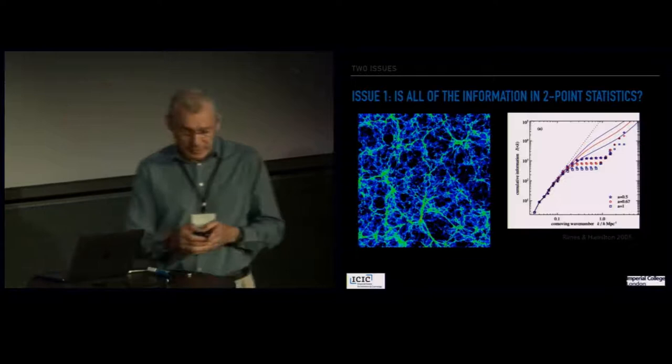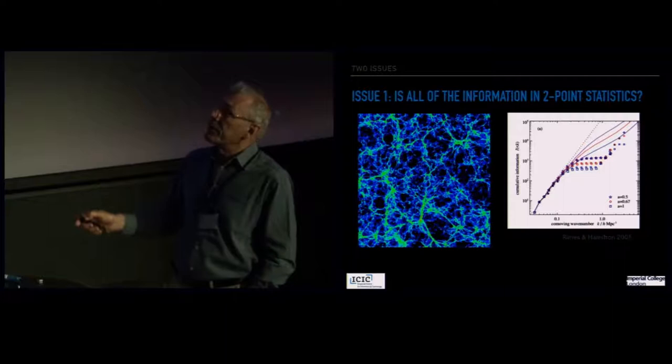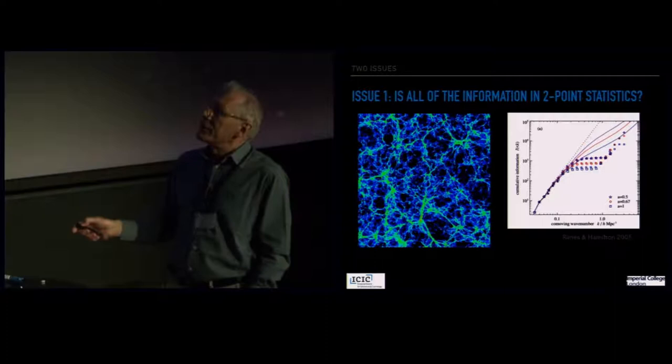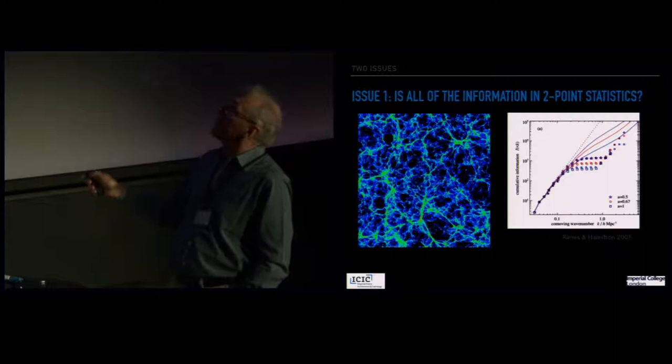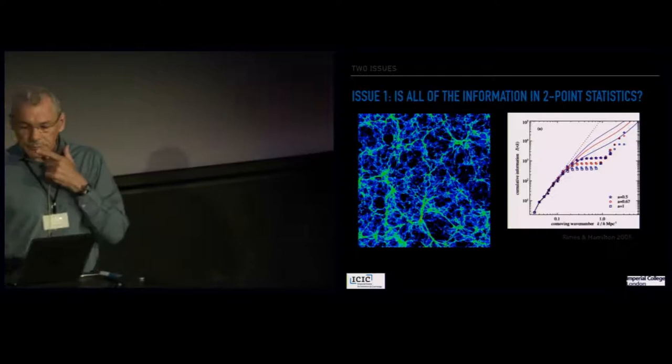For galaxy clustering, you can look at the information content as a function of wave number. Because the field has grown by gravitational instability, the two-point function no longer contains all of the information. The asymmetries seen in large voids and small clusters contain information not fully captured by the two-point function. On large scales, the two-point function really does contain most of the available information, but on smaller scales you fall short. That information has moved into the three-point, four-point and higher-order functions. If you look only at summary statistics based on the two-point function, you don't get all of the information.